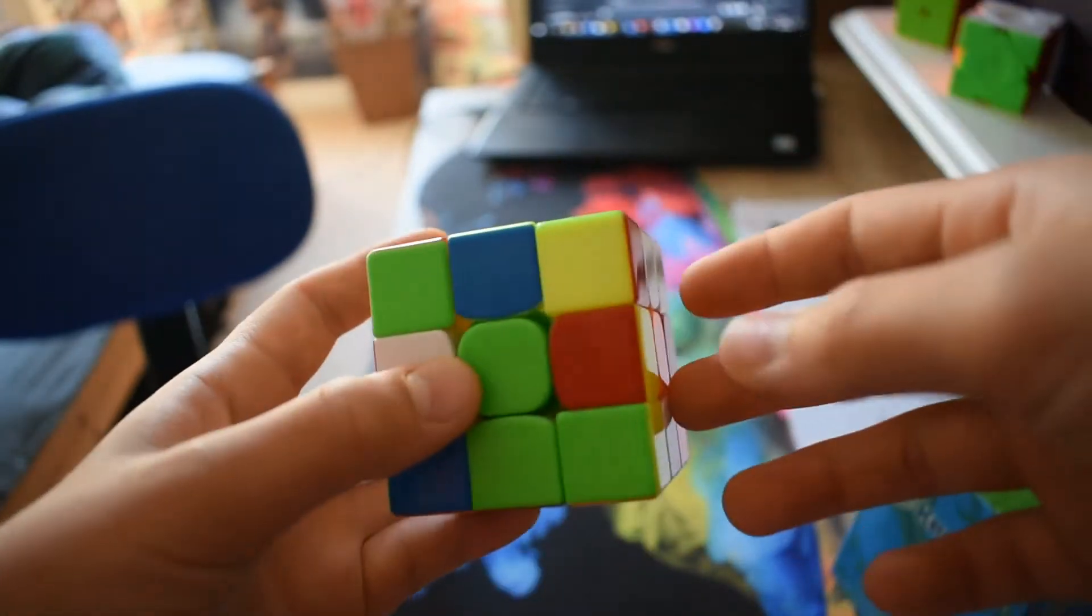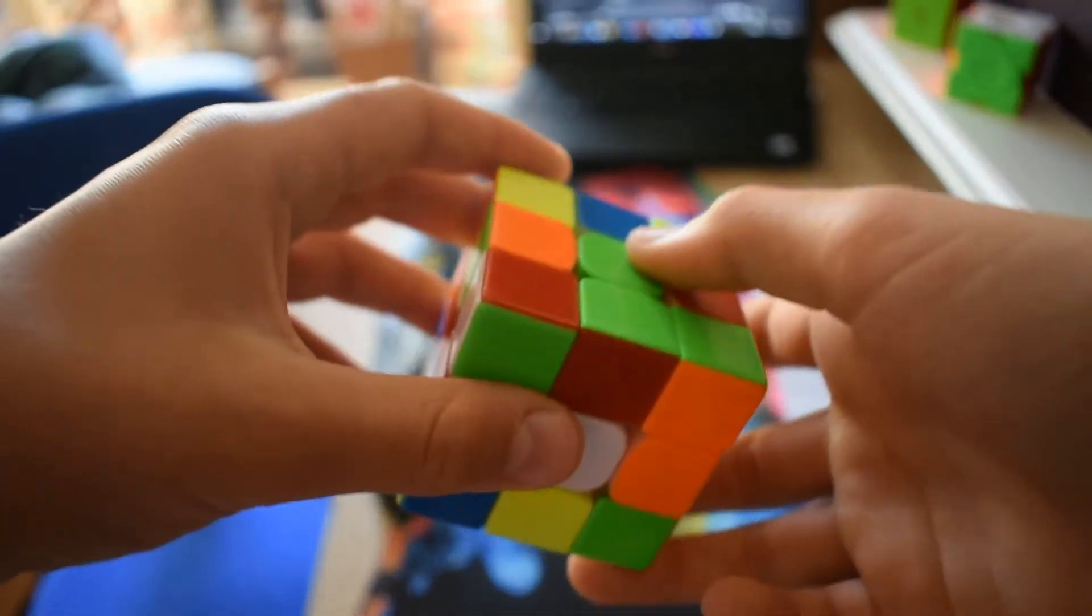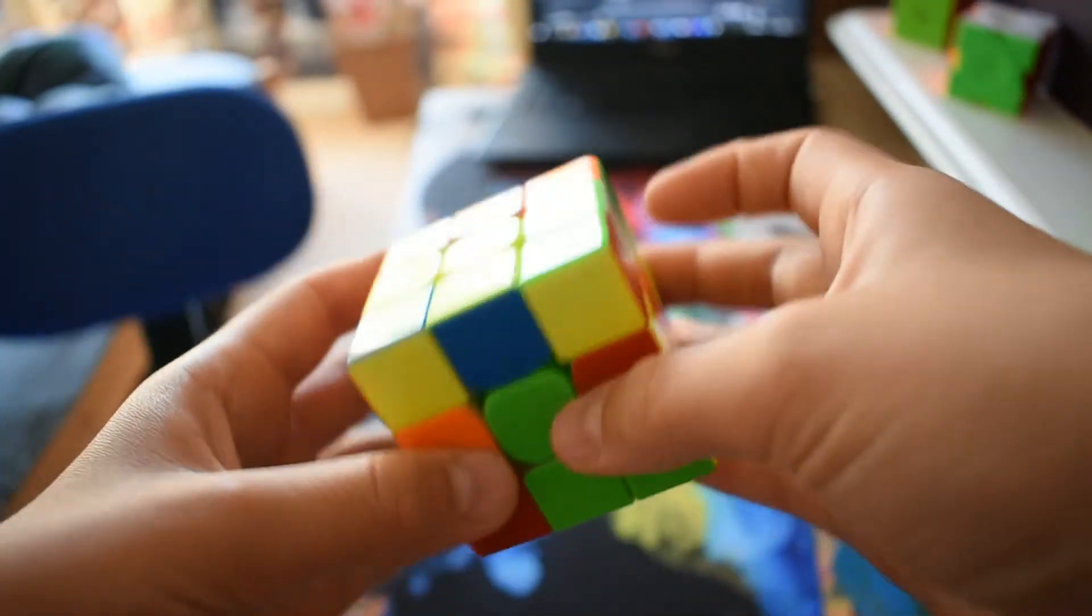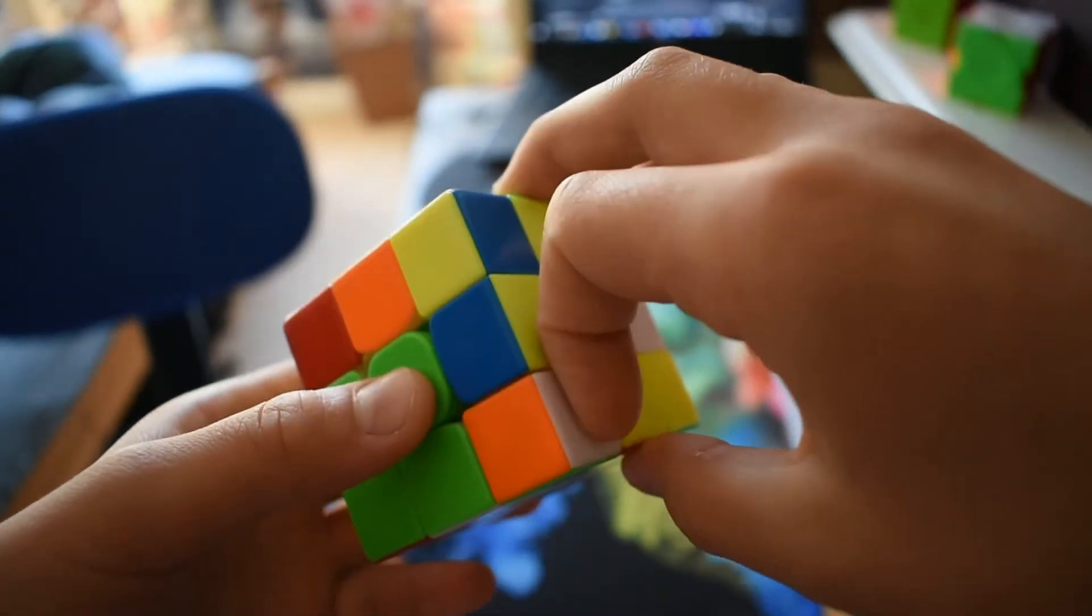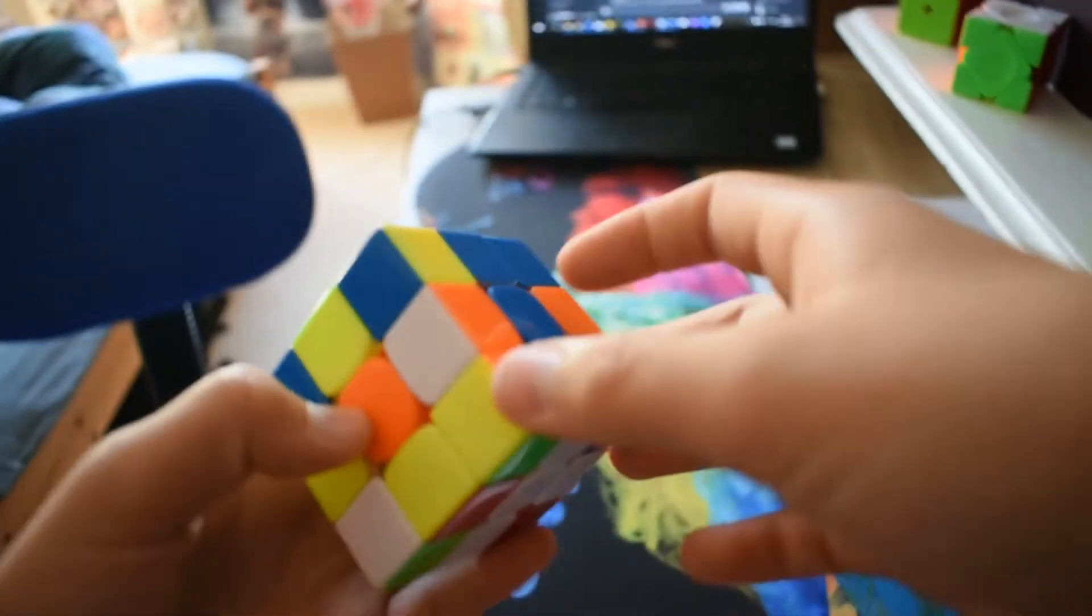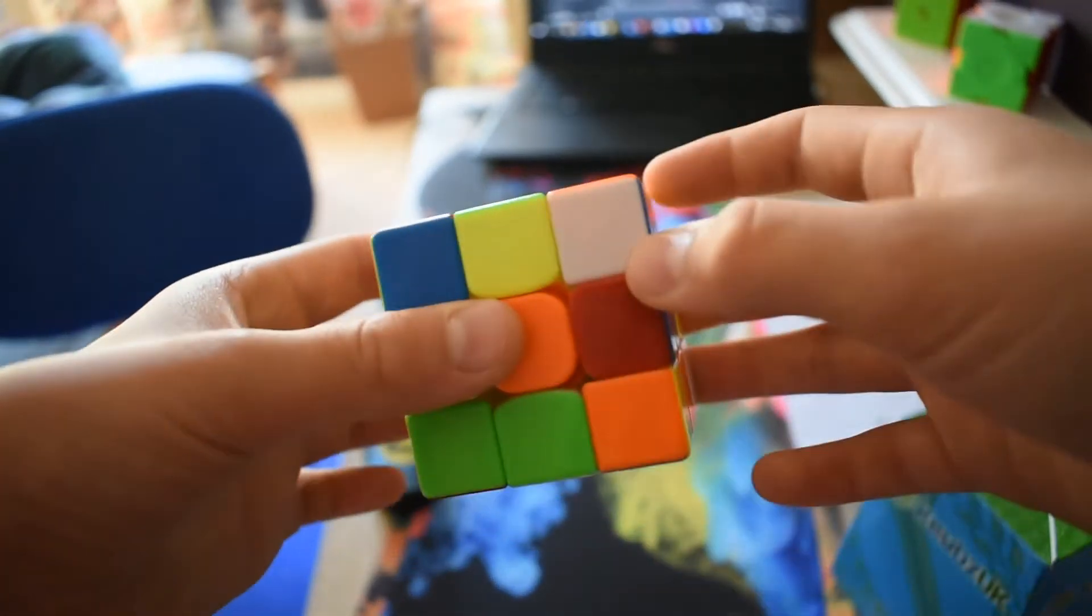So, the cross was actually pretty average. I started off by doing L and then B to insert that piece. And then I inserted this green piece with R' F, which set the orange up into a slightly better case, D R' D'.